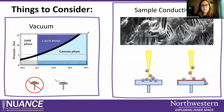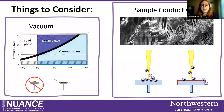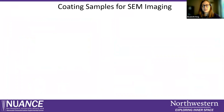To make your sample conductive if it is inherently non-conductive, we have two conductive coaters — one is a sputter coater and one is an osmium coater. I'm going to hand it over to Nathan to talk about those.